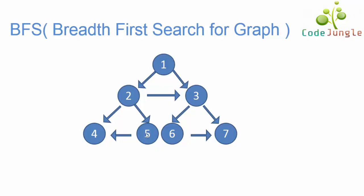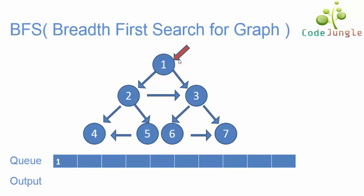To begin, we will consider this graph. The root node is node 1, so we will push it into the queue. The next step is to consider the first element of the queue and push all the neighbor elements of that node into the queue. The first element is 1, and its neighbor nodes are 2 and 3, so they are pushed into the queue.